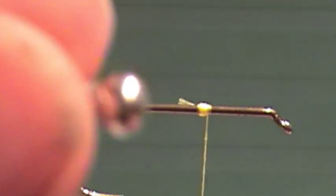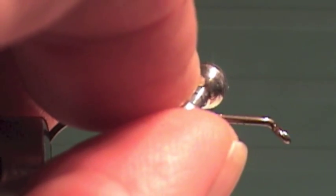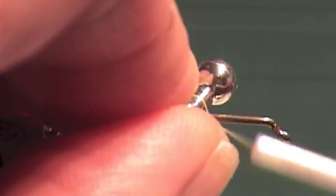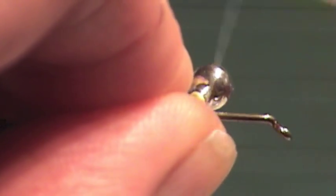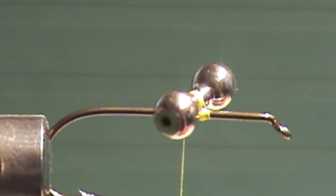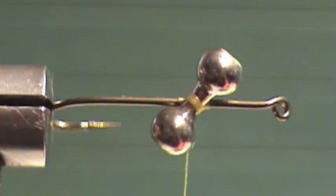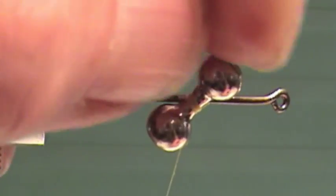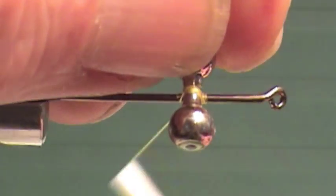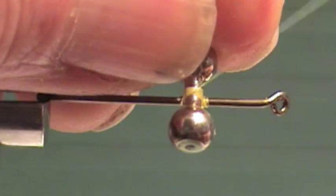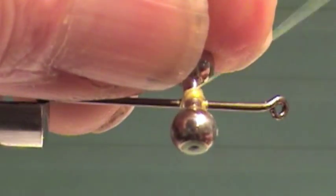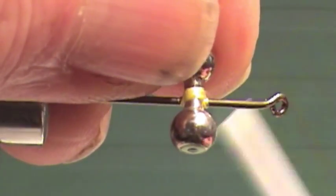I'm going to take my dumbbell eyes here and lay them right against that ball and take some wraps, all in one direction. I'll straighten those eyes out and take wraps in the other direction. I want to get these eyes anchored pretty tightly.